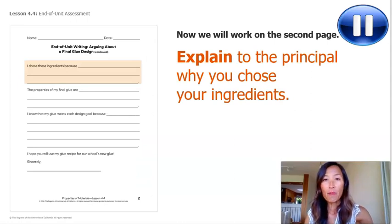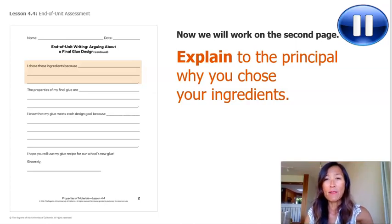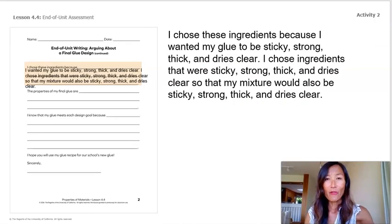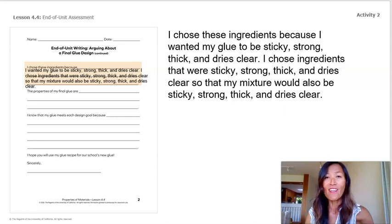Now we will work on the second page: End of Unit Writing, Arguing About a Final Glue Design. It's time to explain to the principal why you chose your ingredients. Keep the properties of the ingredients in mind as you write. Pause the video and record why you chose these ingredients. Here is what I wrote: I chose these ingredients because I wanted my glue to be sticky, strong, thick, and dries clear. I chose ingredients that were sticky, strong, thick, and dries clear so that my mixture would also be sticky, strong, thick, and dries clear.